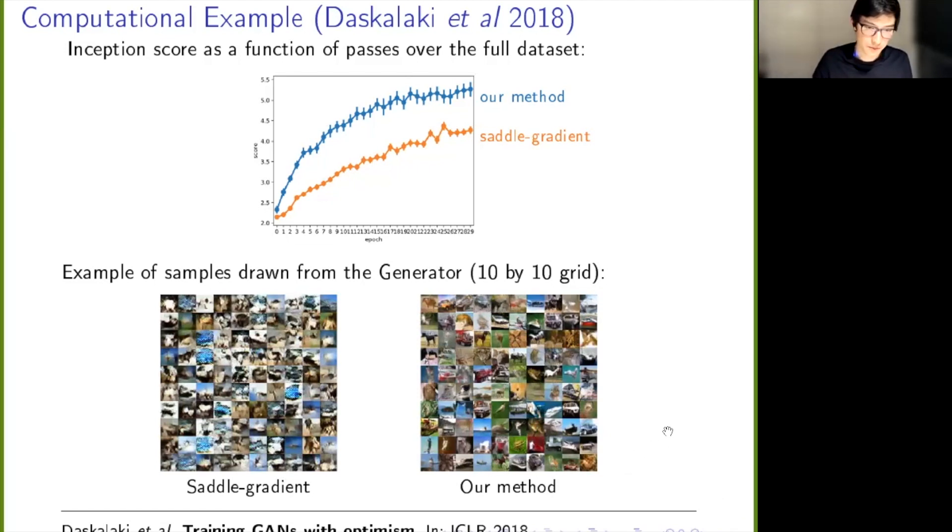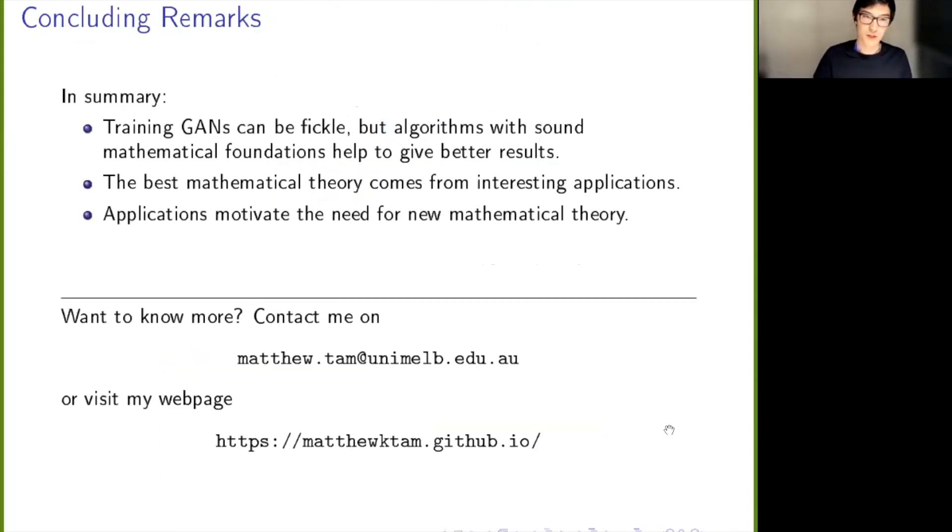Let me just finish up there. My summary is this: training GANs can be fickle, but if you have algorithms with good mathematical foundations, it can help to give better results. But then more generally, I think that the best mathematical theory comes by looking at these interesting applications, and conversely, these interesting applications and cutting-edge applications motivate the need for new mathematical theory. So it's really a two-way street. Thanks for your attention, everyone. If you want to know more, there's my contact details.